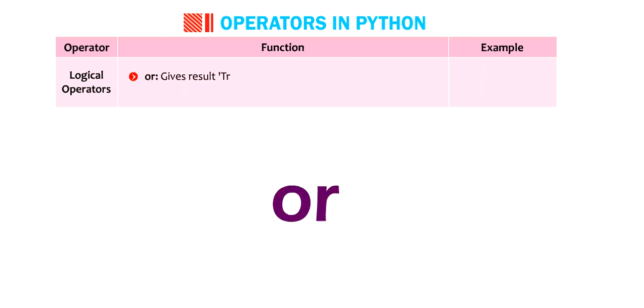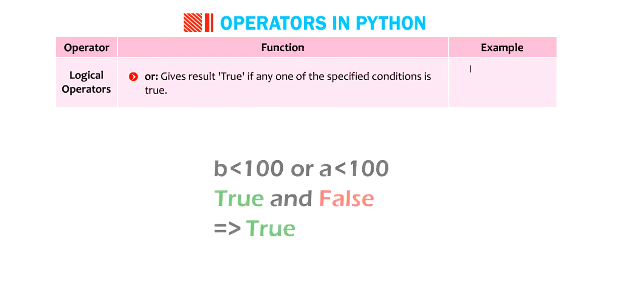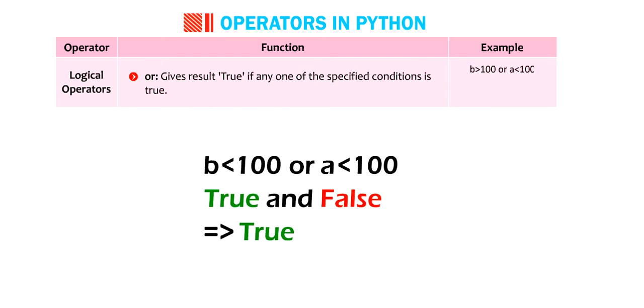Or gives result true if any one of the specified conditions is true. B greater than 100 or A smaller than 100. True or false greater than equal to True.